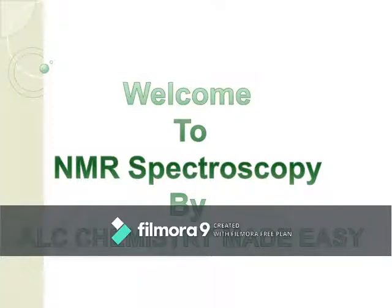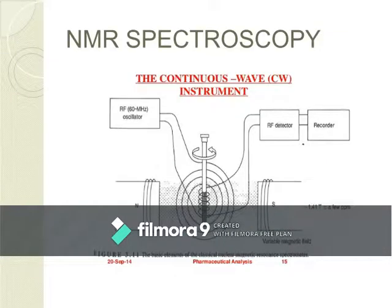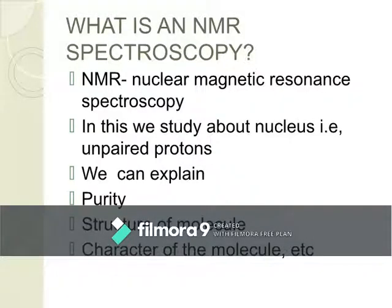The NMR spectroscopy picture I have given you before is the continuous wave model. The continuous wave model has a Helmholtz coil in which current is supplied steadily to meet the resonance condition by changing the magnetic field strength. So it is called a continuous process. It works on absorption phenomena.